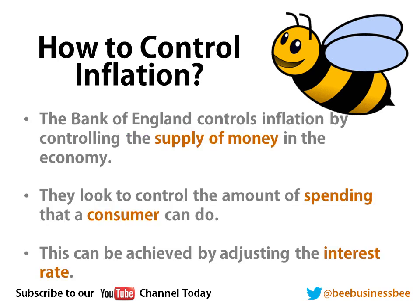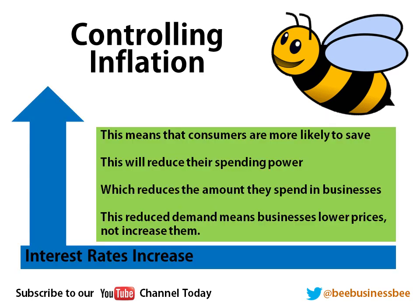So how do we actually control inflation? The Bank of England controls inflation through a clever mechanism — it controls the supply of money in the economy, trying to control the amount consumers spend and save, by simply adjusting the interest rate. When interest rates increase, consumers are more likely to save and put more money in the bank. When you put more money in the bank you have less to spend, so you can't spend it in a business or you start looking for cheaper items. As a result, companies are forced to lower their prices to tempt you to buy, and that in turn lowers inflation.